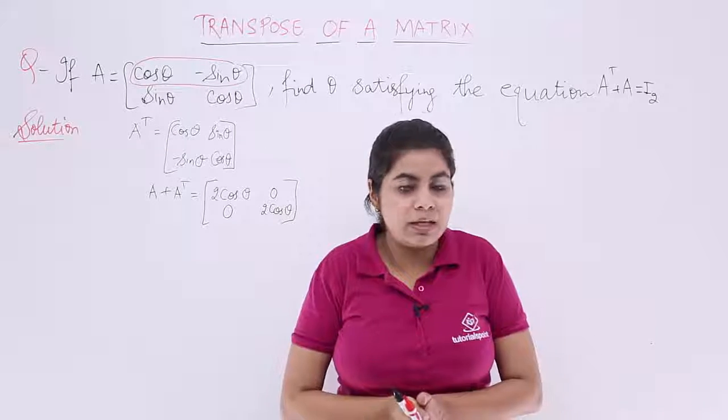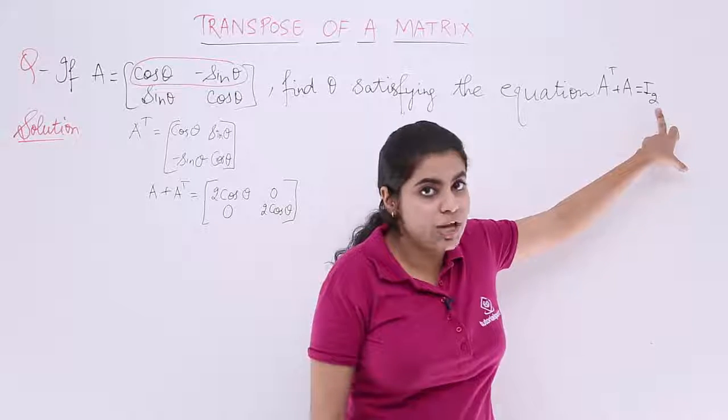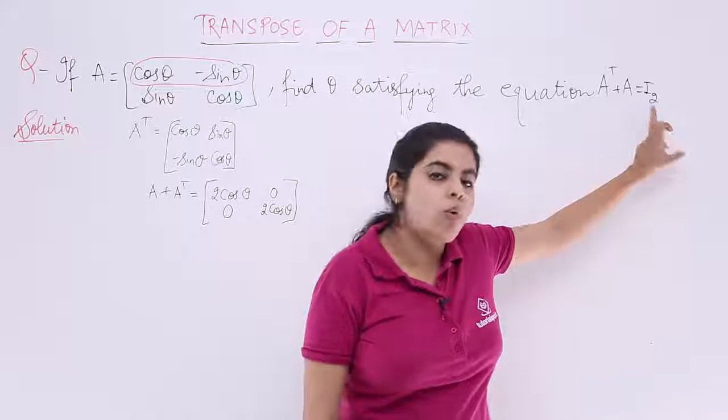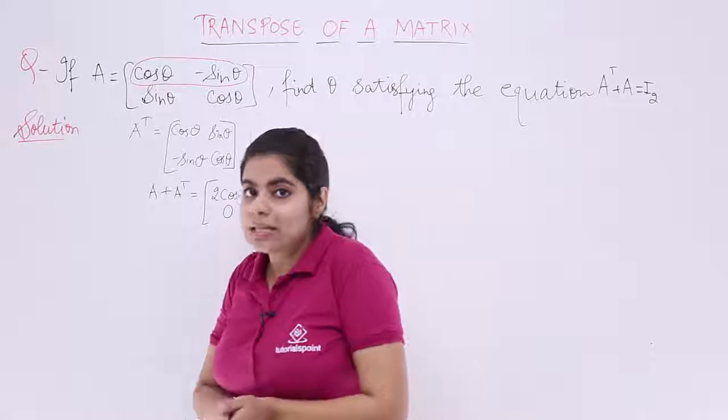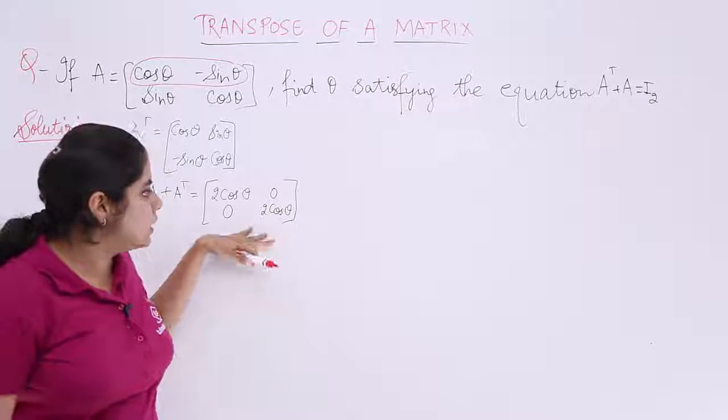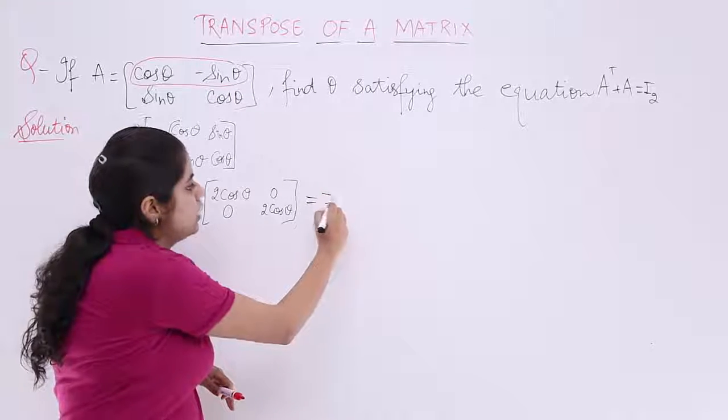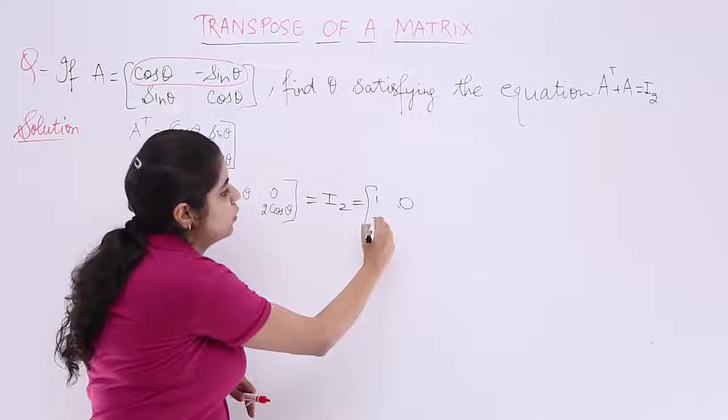Now, I already know that the equation is given to me that it satisfies A equals I₂. What is I₂? I₂ is identity matrix of order 2. Identity matrix of order 2 means 1 0 0 1. If this equation A plus A transpose equals I₂, it is basically equal to 1 0 0 1.